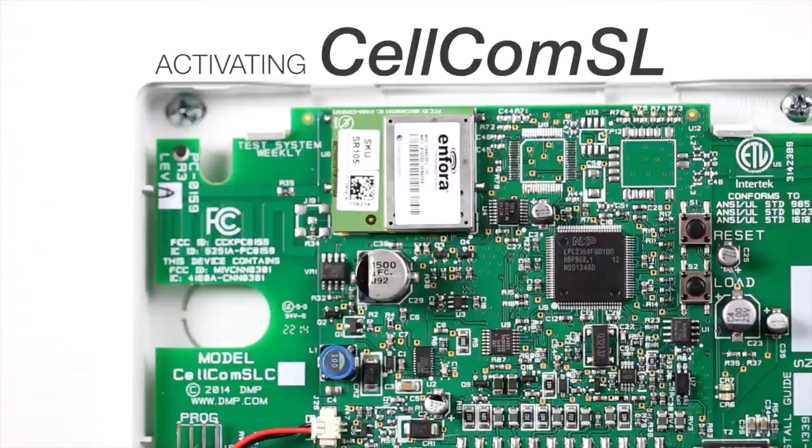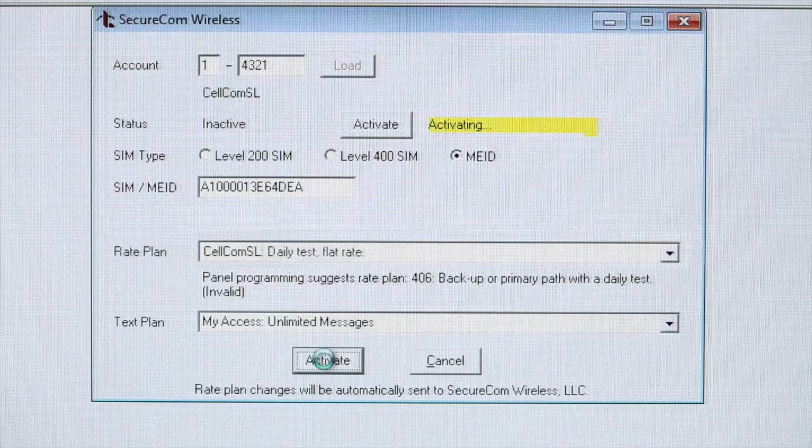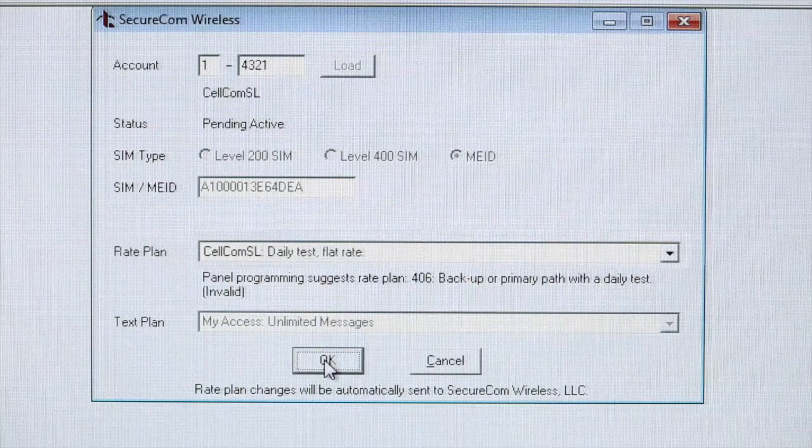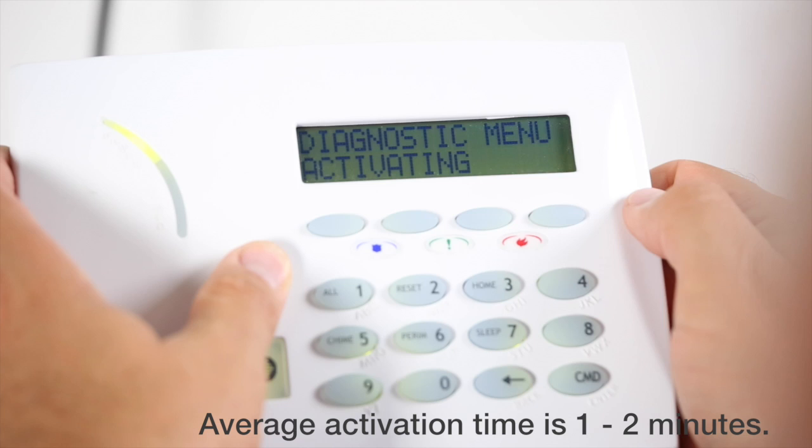To activate the Cellcom SL, enter the MEID and remote link and choose the rate plan. Next, enter into diagnostics by entering 2313 on the keypad. Navigate to activate cell and press any top row select key. When the sure no yes prompt appears, press the select key beneath yes to complete the cellular activation.